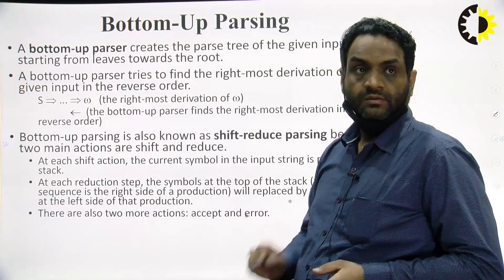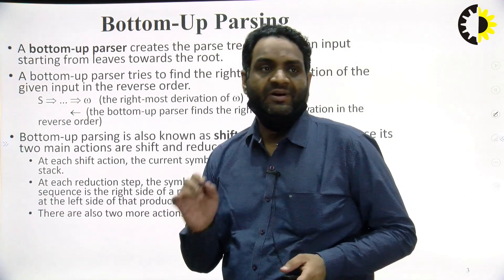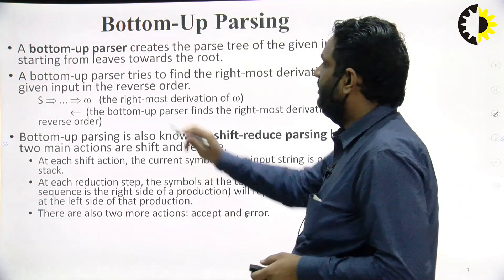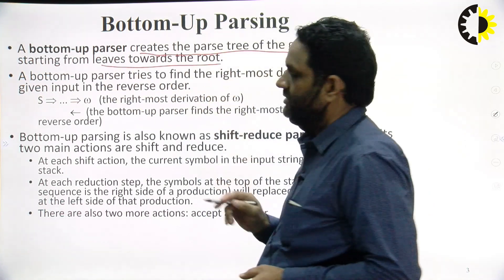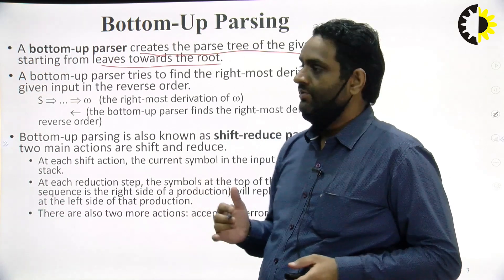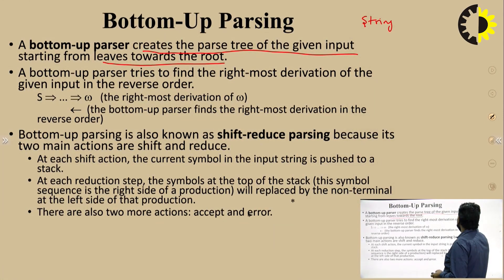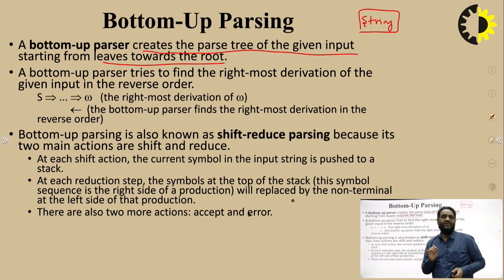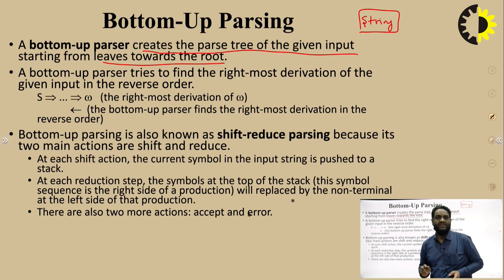What is Shift-Reduce Parsing? Before discussing Shift-Reduce Parsing, since it is a Bottom-up Parsing technique, let us first discuss what is Bottom-up Parsing. A Bottom-up Parser creates the parse tree of the given input starting from leaves towards the root. In all Bottom-up Parsers, we start from the leaves — leaves meaning we start with the input string — and process towards the root, which means the starting symbol.